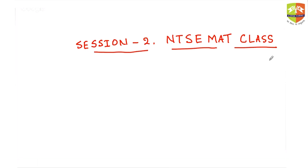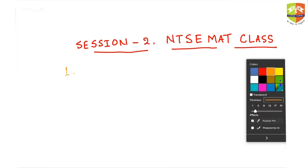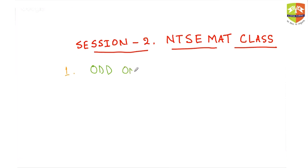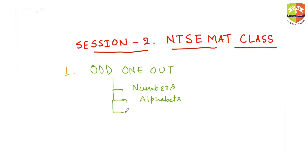Today's session covers two things. The first one is odd one out. In odd one out, there would be a few alphabets, numbers, or other items. It can be about numbers, alphabets, alphanumeric combinations — a mixture of alphabets and numbers — words, or certain objects.